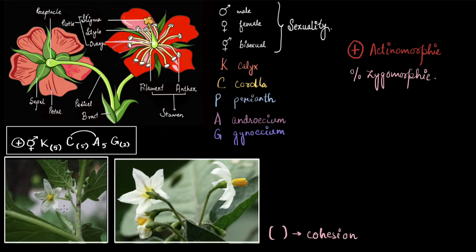The arc joining C and A simply means that the corolla and androecium in this flower are fused. If we see a line joining two different parts of a flower, it means those two parts are fused.